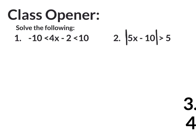So in class on Friday, we learned how to solve compound inequalities and also absolute value inequalities. All you do is kind of pretend that it were a regular inequality, like 4x minus 2 is less than 10. And what would your first step right there be?